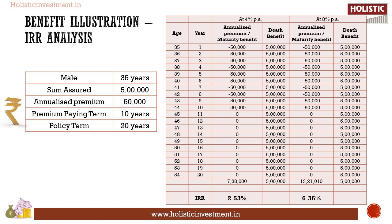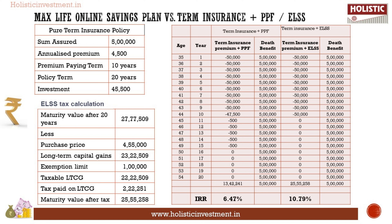Also, the sum assured is too low. Let us make an analogy between MaxLife Online Savings Plan and other similar investments. MaxLife Online Savings Plan neither provides adequate life insurance protection for your family nor provides return on par with other market-linked returns. So let us calculate what if we invest the same amount in other products. Assuming all metrics similar to the benefit illustration — sum assured of Rs. 5 lakhs and annualized premium of Rs. 50,000 — a pure-term policy will give you high coverage at a lower premium. Pure-term life insurance for Rs. 5 lakhs would cost an annual premium of Rs. 4,500, with a premium paying term of 10 years and policy term of 20 years. After paying the annual premium, the balance amount of Rs. 45,500 could be invested as per your choice.